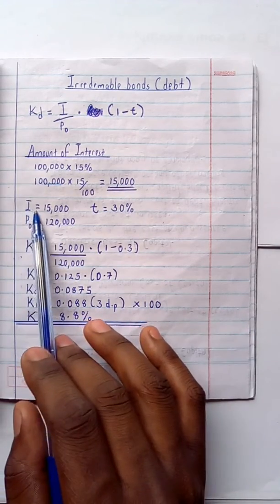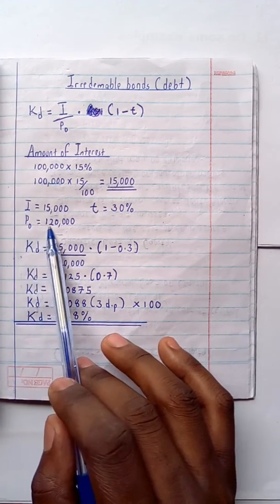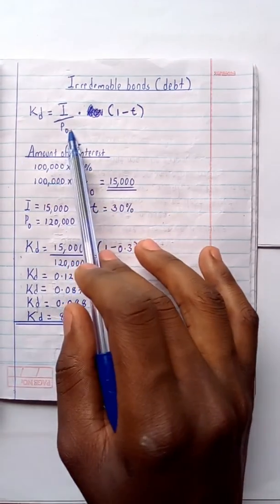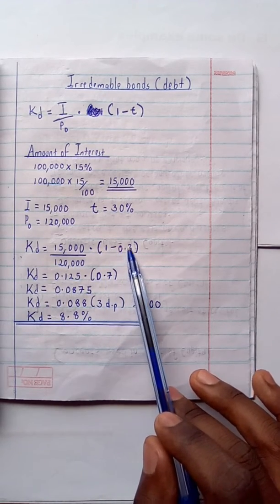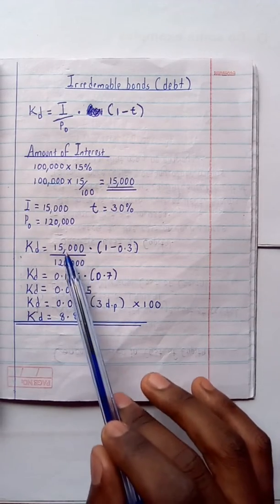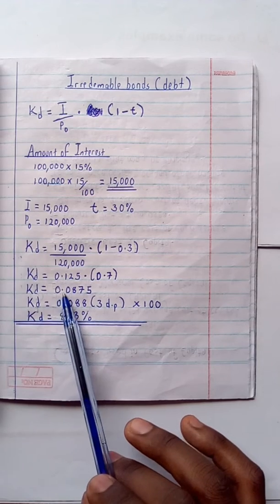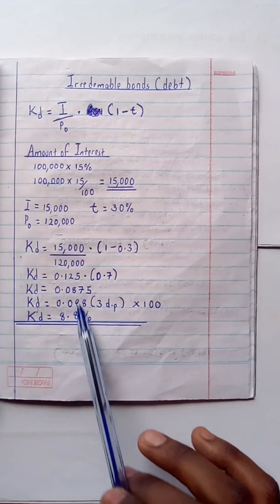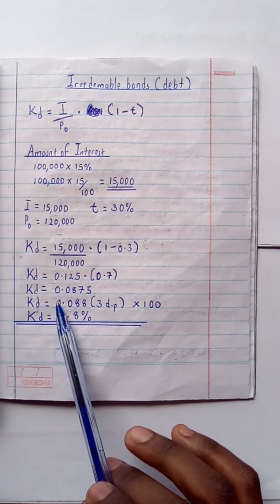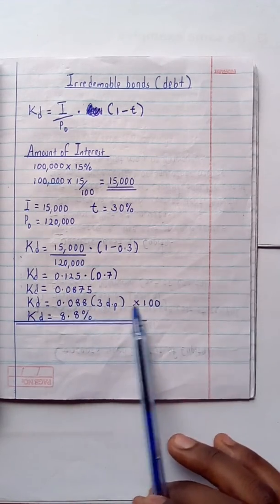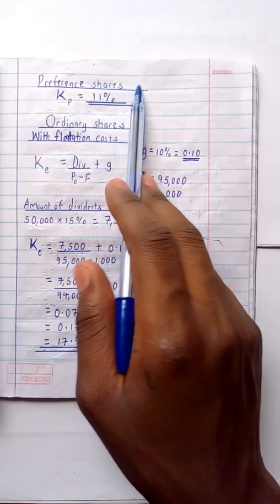Substituting into the formula: 15,000 divided by 120,000, multiplied by (1 − 0.30). That is 15,000 ÷ 120,000 × 0.7, which gives 0.0875. Rounding to three decimal places gives 0.088, and multiplying by 100 to convert to a percentage gives a cost of debt of 8.8%.